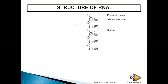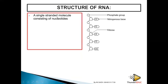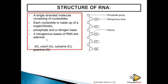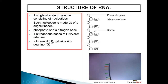The structure of RNA is almost like DNA but with a small difference: it has uracil instead of thymine, and it is single-stranded instead of double-stranded, and it is not helical. A single strand consists of nucleotides containing phosphate, sugar, and nitrogenous bases. The sugar is ribose instead of deoxyribose. The four nitrogenous bases of RNA are adenine, uracil, cytosine, and guanine.